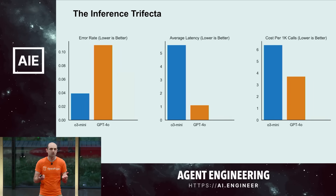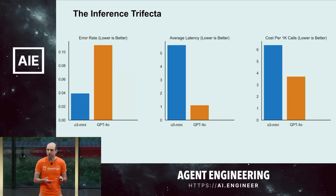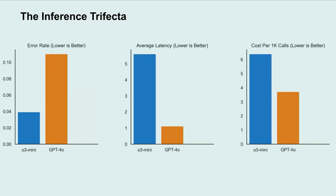We also measured cost. Interestingly, O3-mini — even though it has a much lower per-token cost than GPT-4o if you just look at the pricing page on the API — for their specific use case we found it was a little bit more expensive because it generates many more reasoning tokens, so it has much longer outputs.